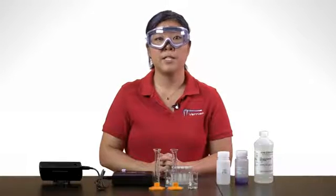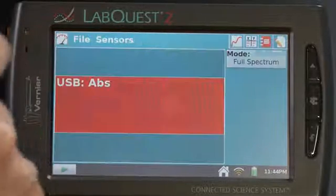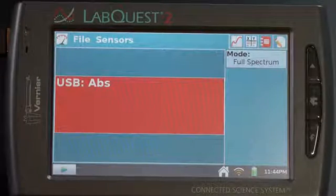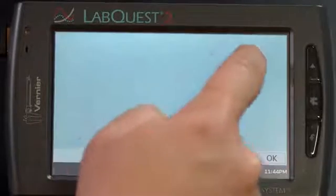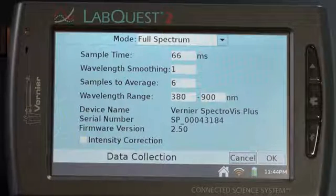Now you will set up the data collection mode. Go to the meter screen. Tap on the gray mode box and the screen changes. Tap on mode and choose time based.